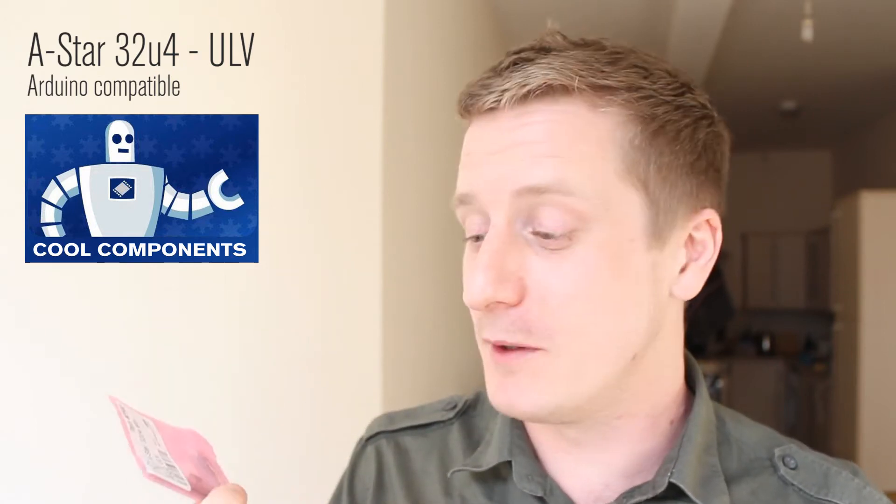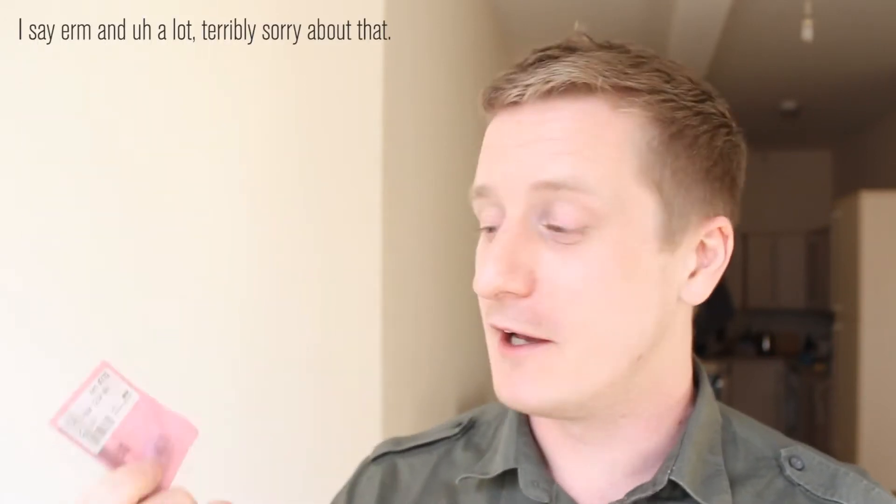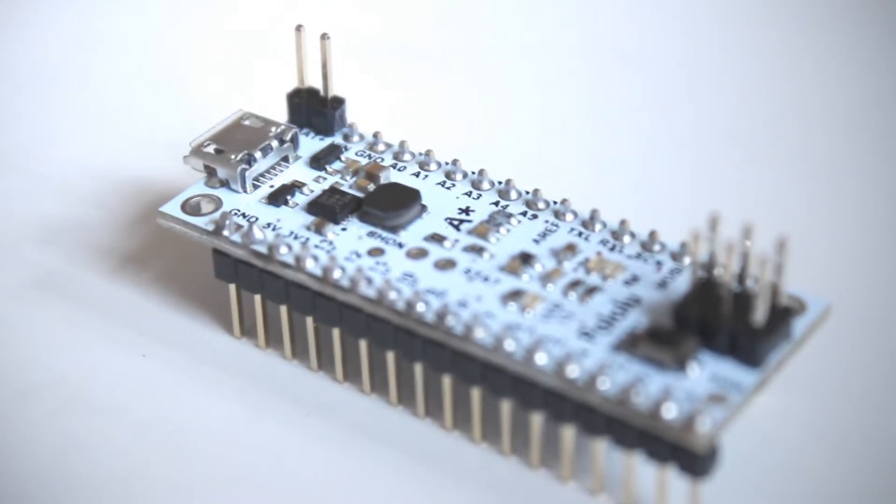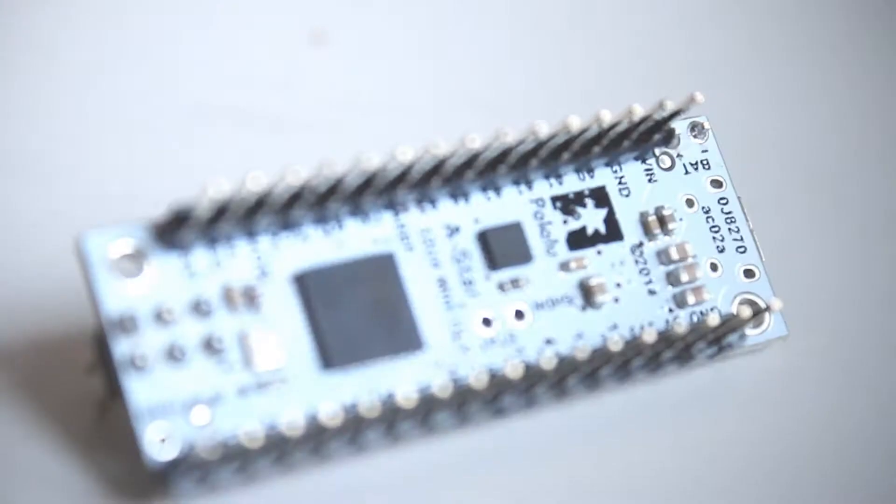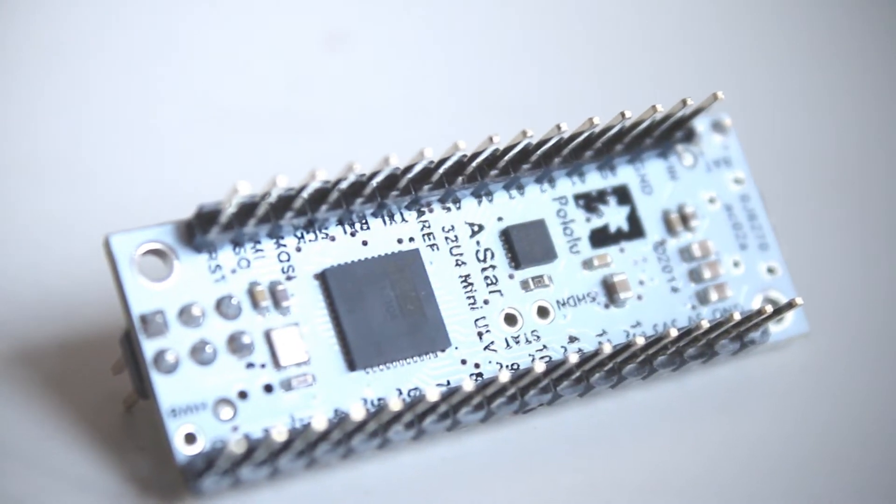I'll put a link to where you can buy this. It's kind of cheap, it's not very expensive, and it's pretty awesome. Now, this is the 32U4, the ATmega chip anyway. You'll find that on a lot of boards. It's got USB abilities built in, so you don't have to worry about FTDI or all that kind of stuff.